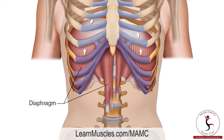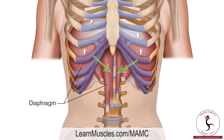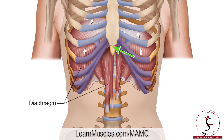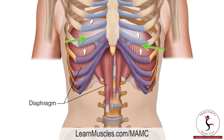The diaphragm has an inferior attachment that is circumferential — 360 degrees around the body — attaching onto the internal surfaces of the lower six ribs, as well as the sternum and xiphoid process, and also attachments onto L1, L2, and L3 of the lumbar spine. From there, the fibers run superiorly, coalescing to form what is called the central dome of the diaphragm.